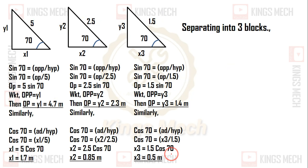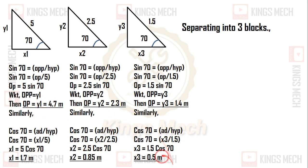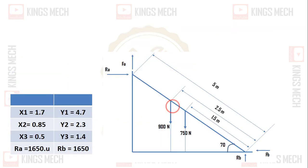So these are all the coordinate values: x1, y1, x2, y2, x3, y3 — which represent the horizontal and vertical distances for the top of the ladder, the midpoint, and the man's position respectively.